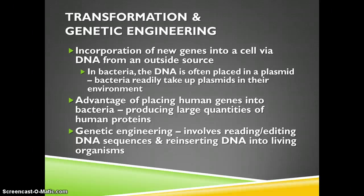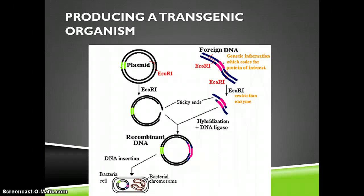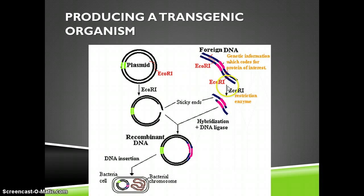Genetic engineering involves reading and editing DNA sequences and then reinserting the DNA into living organisms, changing the genome of something. To produce a transgenic bacterium, as in the plasmid activity done in class, you take your plasmid and your foreign DNA and cut both with the same restriction enzyme — EcoR1, which produces sticky ends that readily bind with each other. You then use ligase to attach them back together, and the bacteria take up the recombinant plasmid and pass it on to all daughter cells.